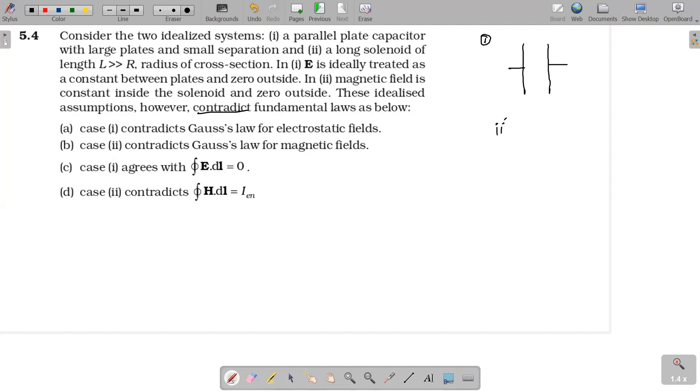Second case, a long solenoid of length L, a very long solenoid. L is very much greater than R, R being the radius of the solenoid.